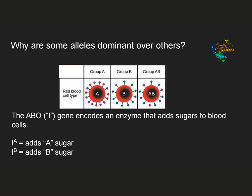In heterozygous individuals with genotype IA IB, both enzymes are present, so you have both sugar types on your blood cells. This is a case of codominance — the phenotype of a heterozygous individual reflects both of the phenotypes that are present in the homozygous individuals.